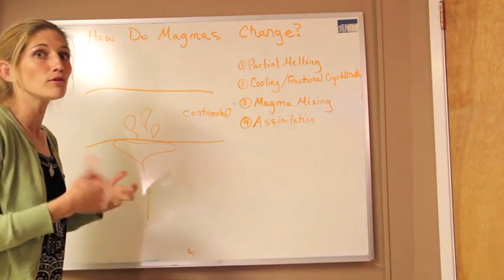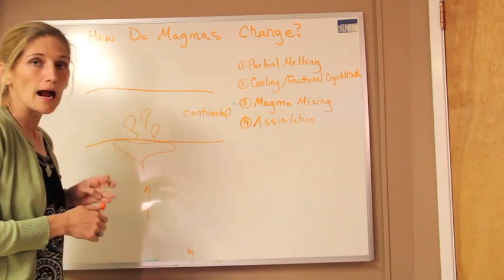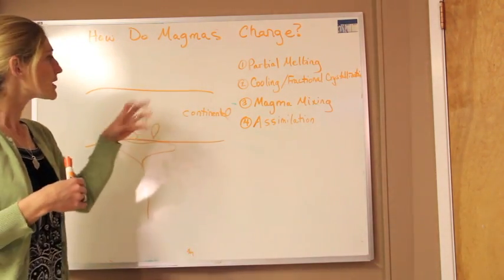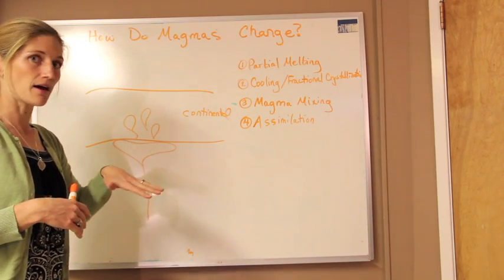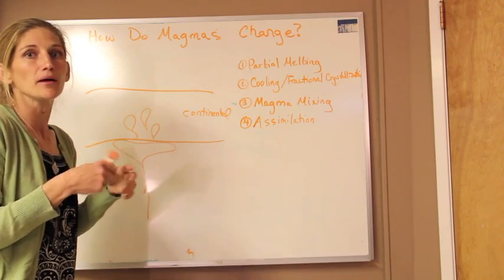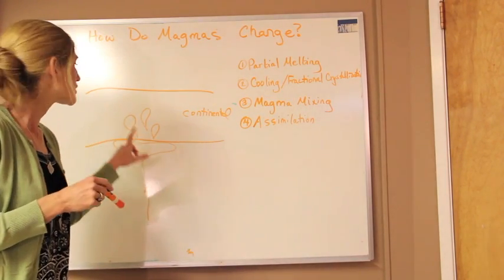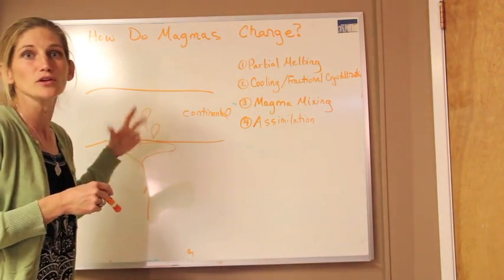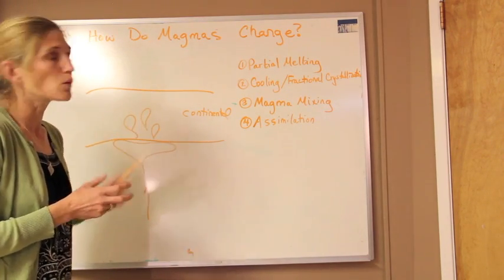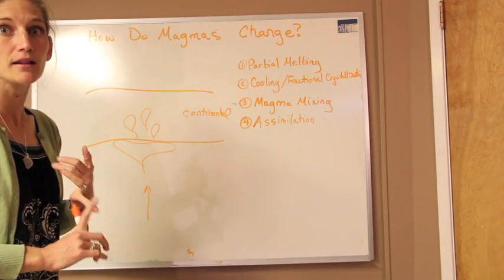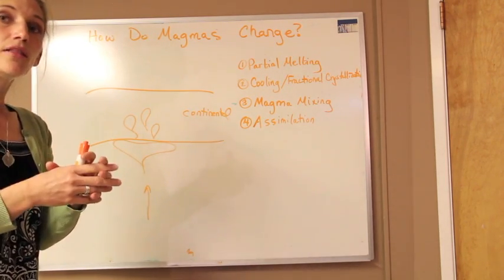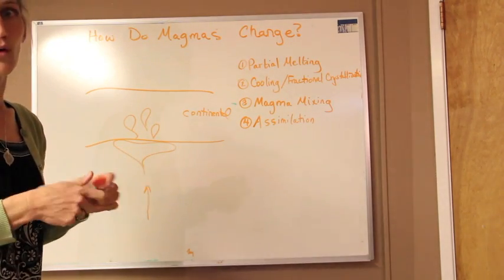These blobs are going to be more felsic than the rock they were originally part of, because when we look at Bowen's reaction series, those light-colored minerals are going to start to melt back into the magma. Things that crystallize at the lowest temperatures are going to be the first to melt off and rise up through the continental crust to create new material. This is one example of partial melting — it can happen below oceanic or continental lithosphere — and it changes the material that comes up so it becomes more felsic over time.